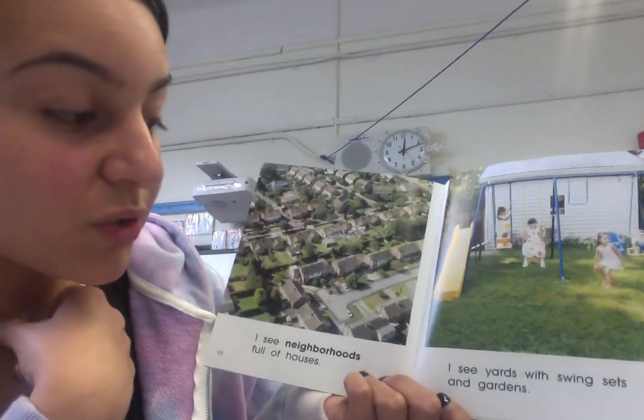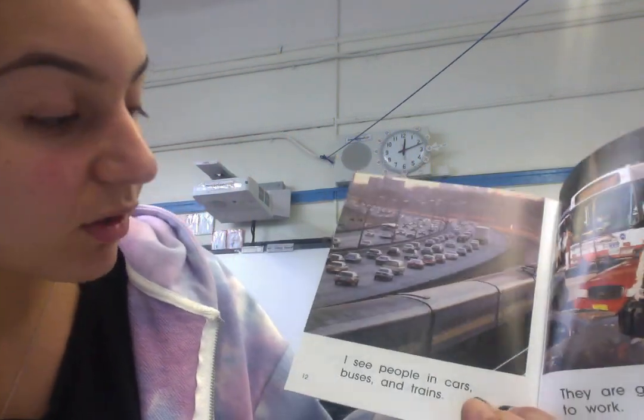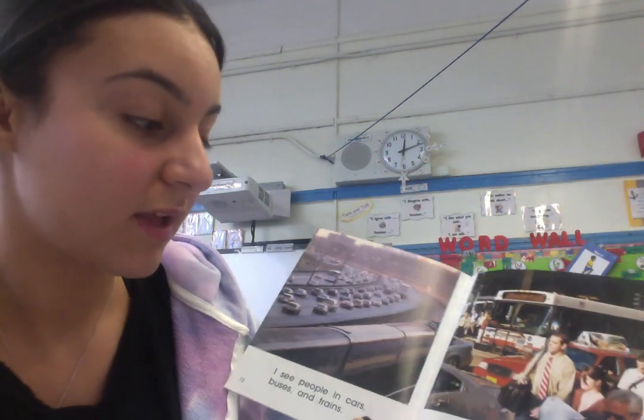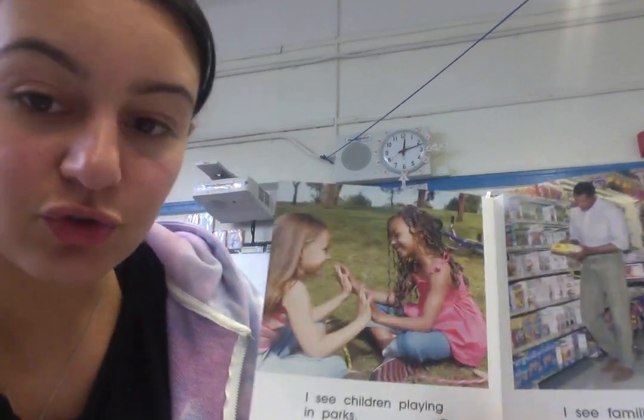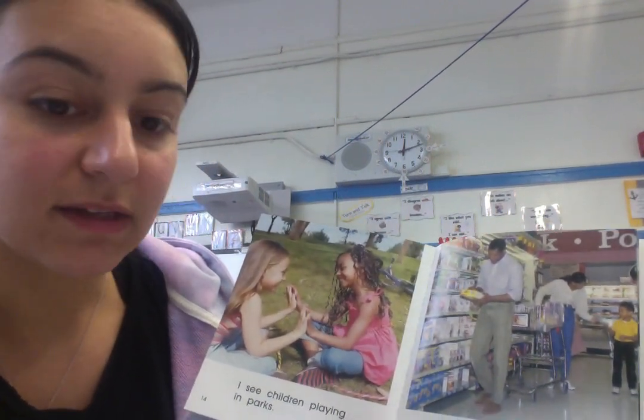I see yards with swing sets and gardens. I see people in cars, buses, and trains — they are going into the city to work. Don't forget that. I see children playing in parks, so in suburbs they also have parks. I see families shopping in stores. In the suburbs, they might not have little grocery stores like we do in urban settings. They have big supermarkets like ShopRite and Stop and Shop — that's what they're like in the suburbs.